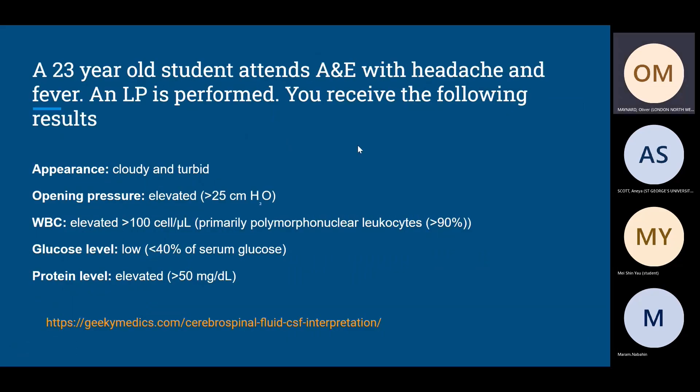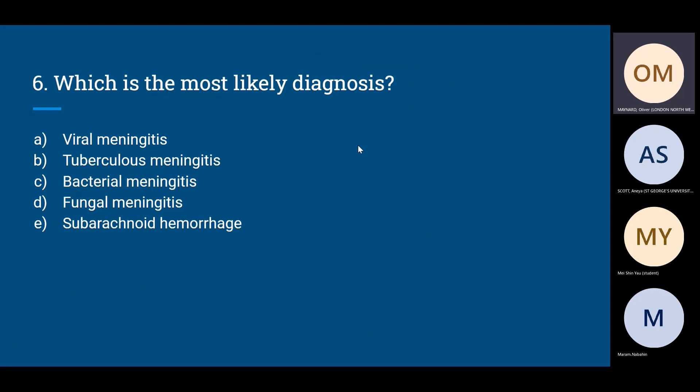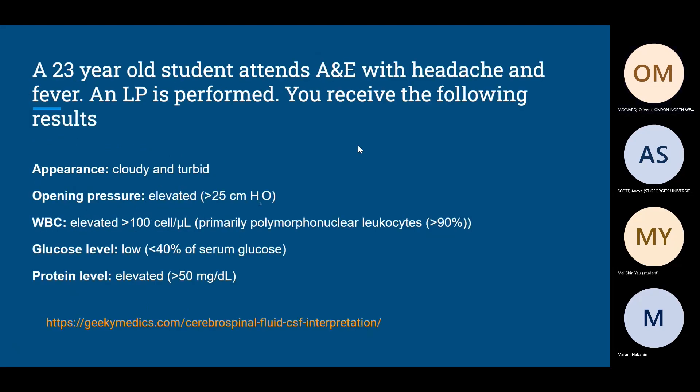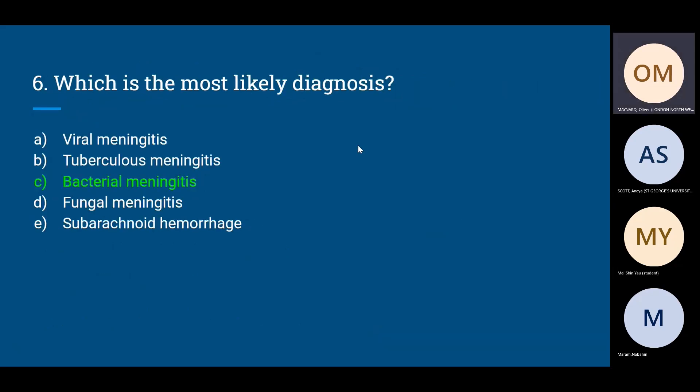Question six: a 23-year-old student presents with headache and fever; a lumbar puncture is performed. Results: cloudy appearance, elevated opening pressure, white blood cells predominantly polymorphonuclear (neutrophils), low CSF glucose compared to serum, and elevated protein. What is the most likely diagnosis? Options: viral meningitis, tuberculous meningitis, bacterial meningitis, fungal meningitis, or subarachnoid haemorrhage. The answer is bacterial meningitis.